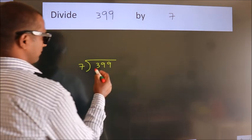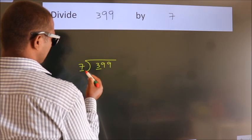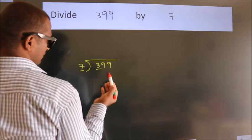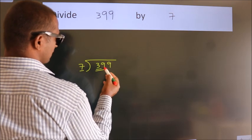Next. Here we have 3, here 7. 3 smaller than 7. So we should take 2 numbers, 39.